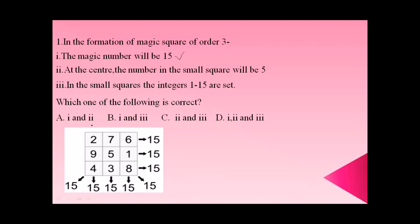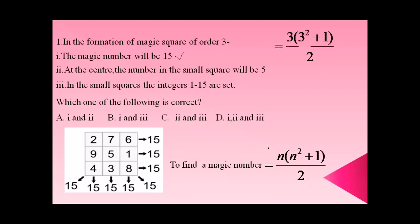There is another method to find the magic number. The formula is: n × (n² + 1) / 2. For order three, that gives 3 × (9 + 1) / 2 = 3 × 10 / 2 = 15. So the magic number is 15. Statements one and two are correct, and the correct answer is option A.